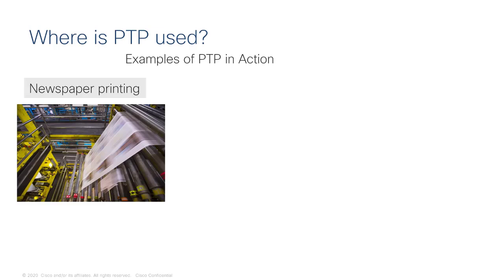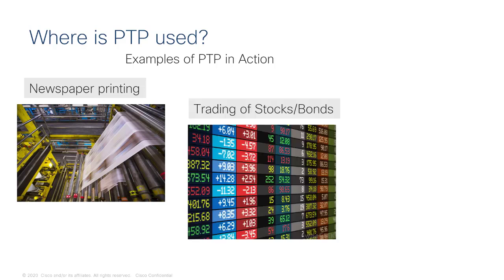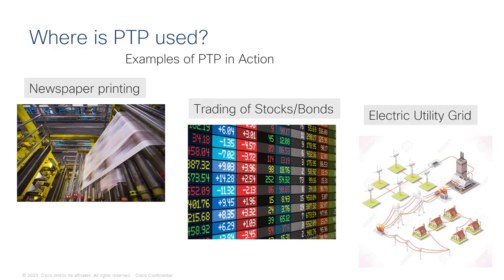So where is PTP used? Have you ever seen newspapers being printed? These things are moving really fast and everything is in time. If the ink is slightly off on the newspaper, that's probably because there was an error and things got out of time. Or if you're on Wall Street trading stocks and bonds, the faster you can synchronize your devices to make trades, the better you are and the more money you're making — time is money to the Wall Street guys. And electric utility systems: your power grid uses PTP to synchronize the opening and closing of relays to deliver the power.